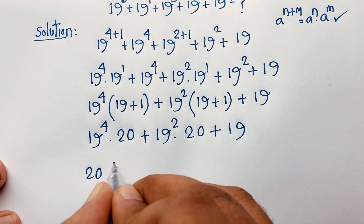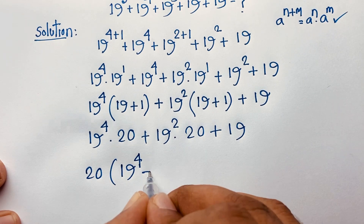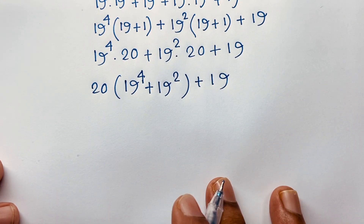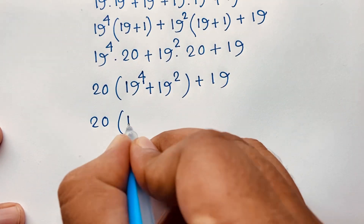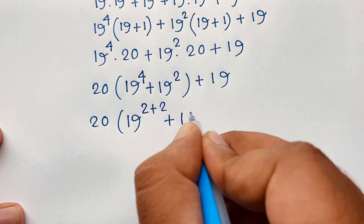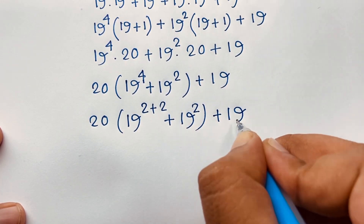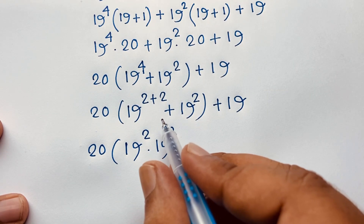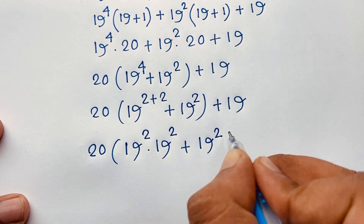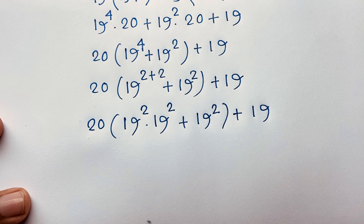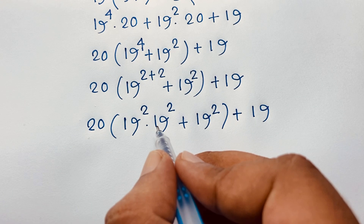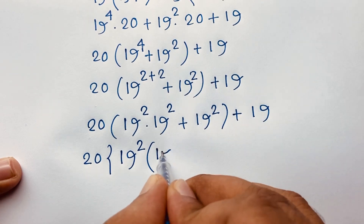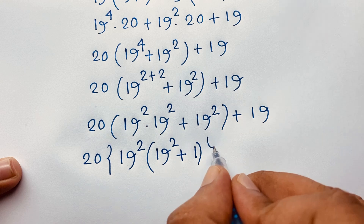Now 20 is common. Taking 20 as a common factor gives 20 times (19^4 plus 19^2), plus 19. Then applying the exponential formula again, we factor 19^2 from (19^4 + 19^2): 19^2 is common, so this becomes 20 times 19^2 times (19^2 + 1), plus 19.